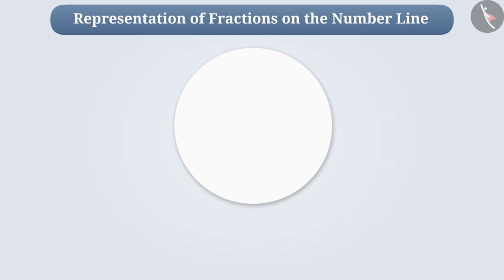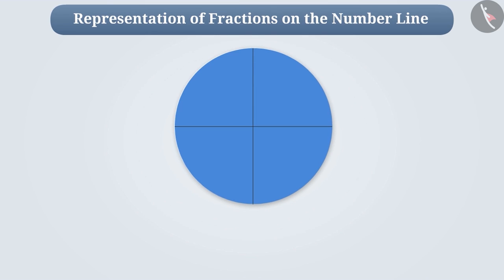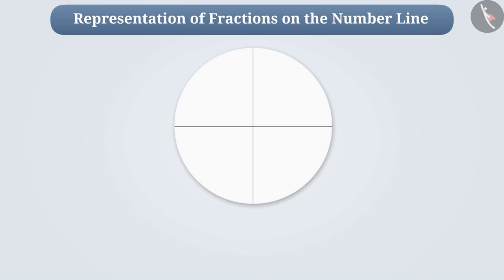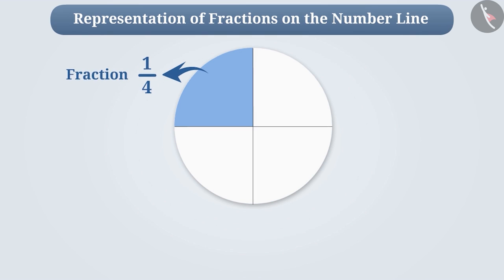Here is a paper. Consider that we have divided it into four equal parts. When we look at these four parts collectively, this represents a whole. If we take one part out of four parts of the paper, then this part is one-fourth fraction of the whole part.